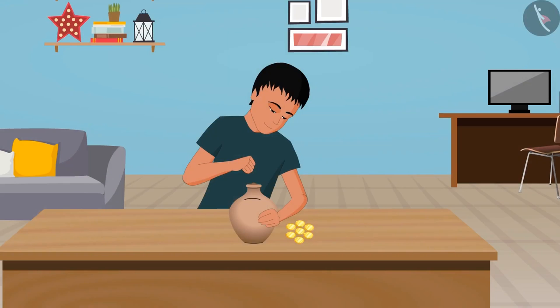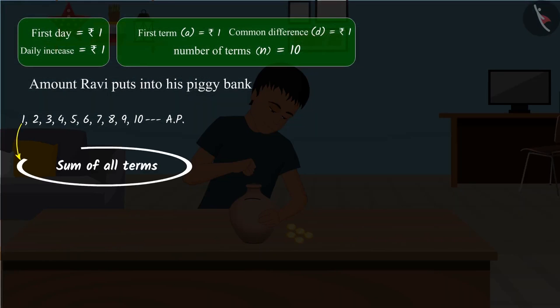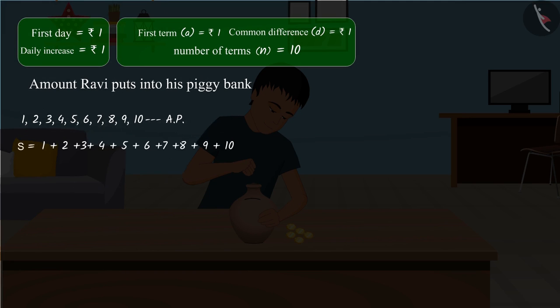Now we have to find out how much money Ravi puts into the piggy bank in 10 days. For which, we have to calculate the sum of all the terms of this arithmetic progression. We represent it by S and it displays the sum of the first n terms of an arithmetic progression.